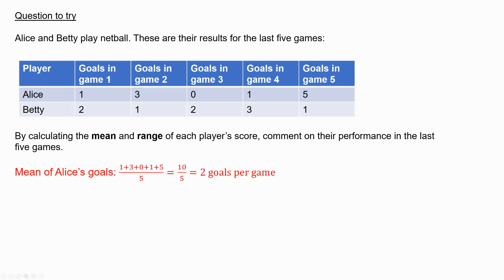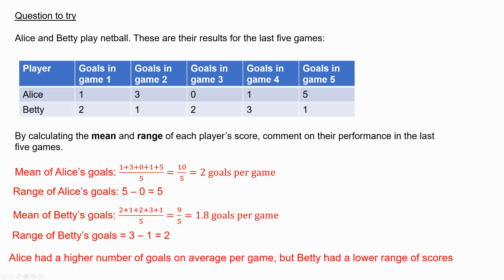Alice's mean goals is 2 goals per game. The range of Alice's goals is 5. The mean of Betty's goals is 1.8 goals per game. And her range is 2. We say that Alice had a higher number of goals on average per game, but Betty had a lower range of scores, so that means that she's a more consistent player.